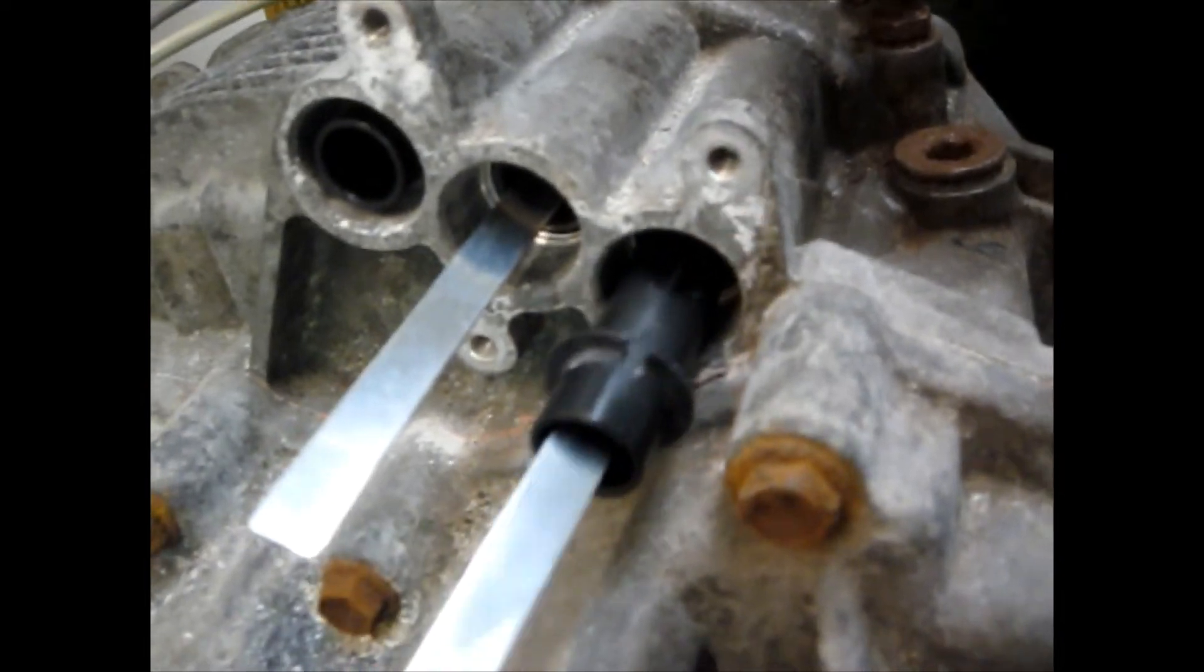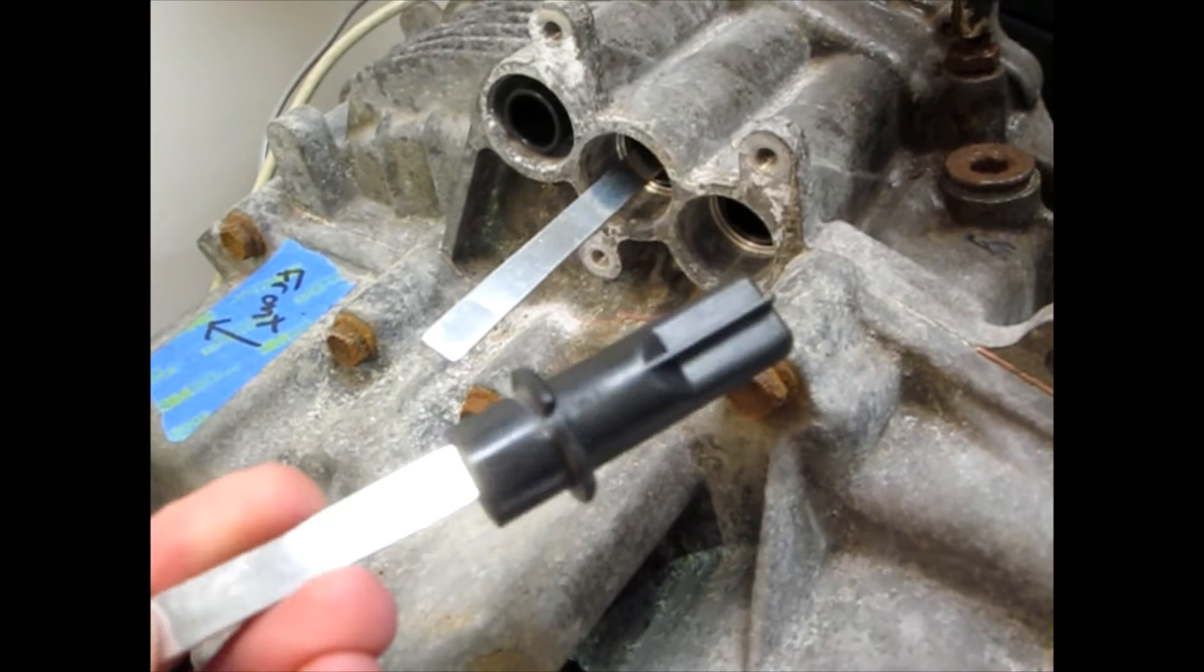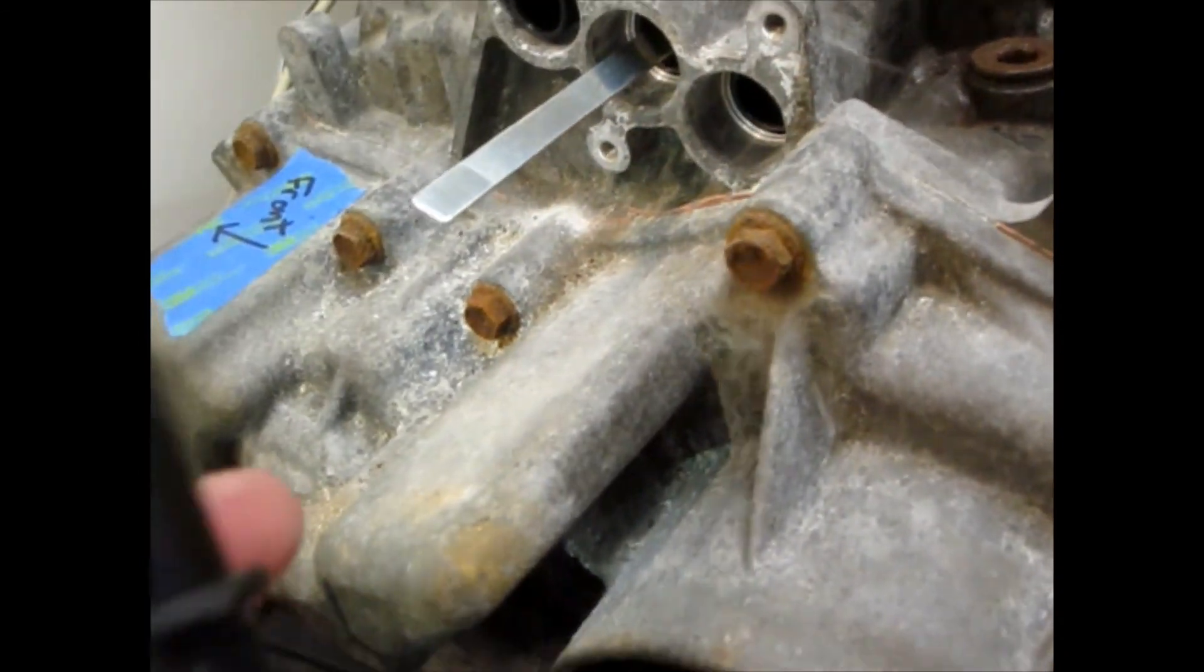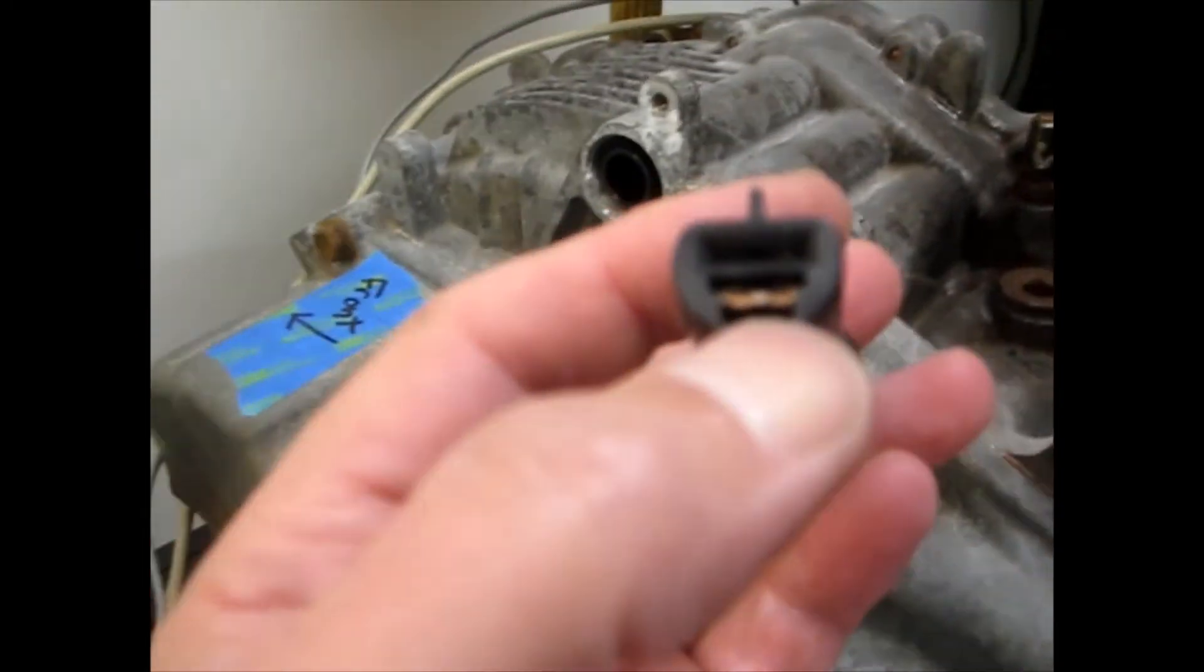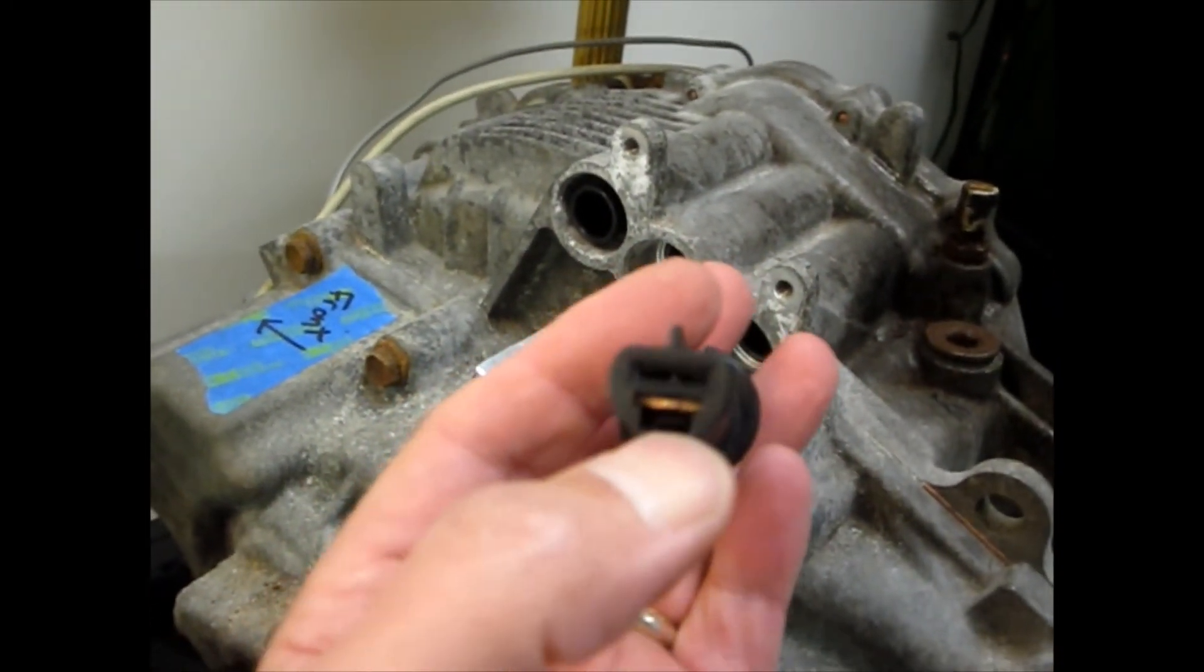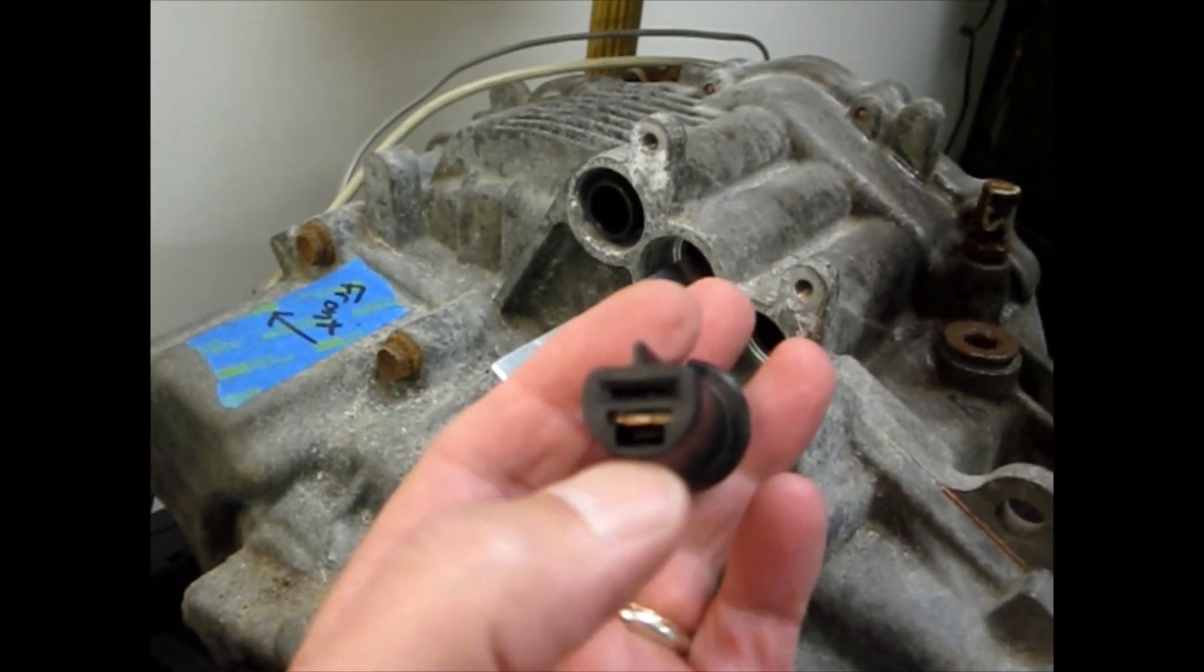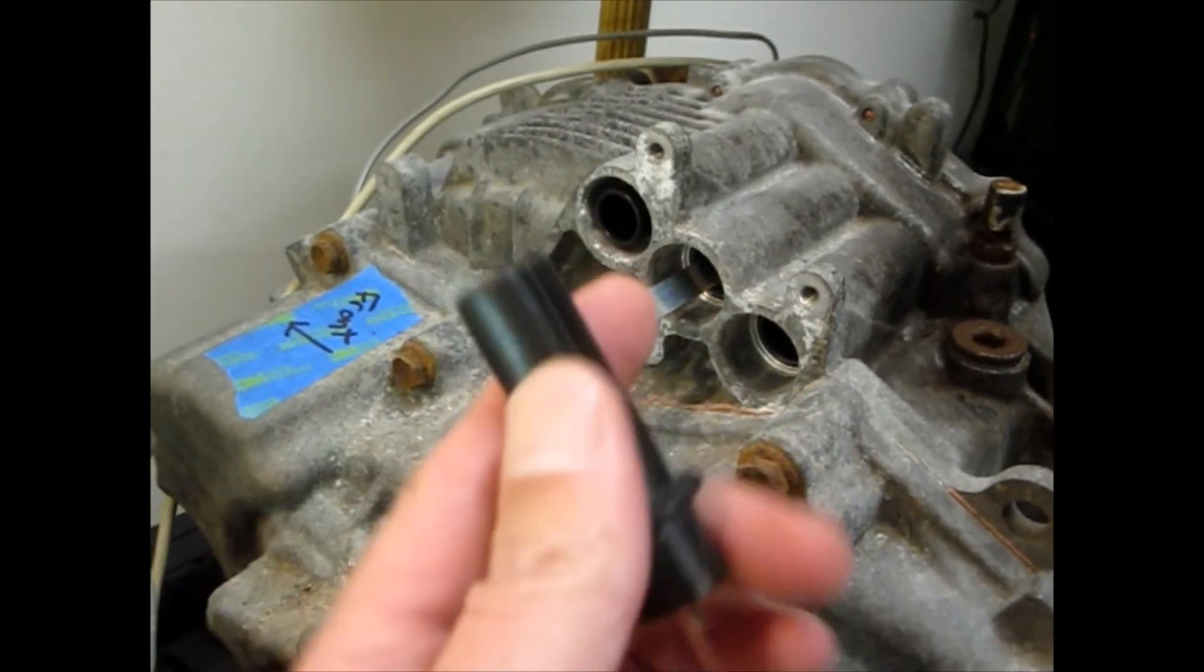And then here's the whole assembly put together and there's the little tab to release it, is right inside here. If I can get this to focus, you see that little tab in there right at the bottom? Just put a screwdriver in there, pry it down, you can pull this sleeve right off.